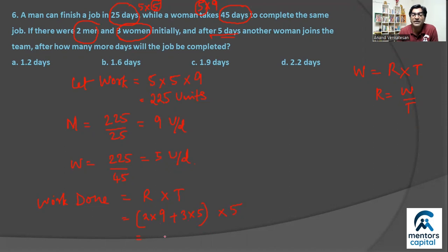Now question is saying there were 2 men and 3 women initially who work for 5 days. So initial work done should be rate into time. 2 men's rate is 2 into 9, 3 women's rate is 3 times 5. And they seem to have worked for 5 days. So how much work did they complete? Well, this is 18 plus 15, 33, 33 into 5 is nothing but 165 units. So 165 units work has been finished.